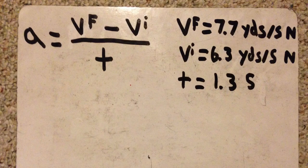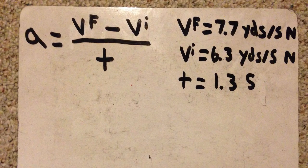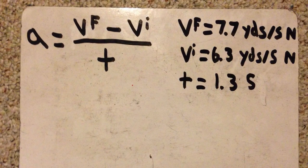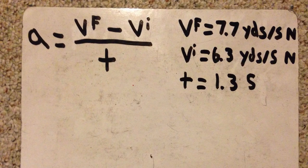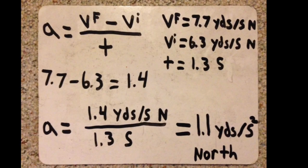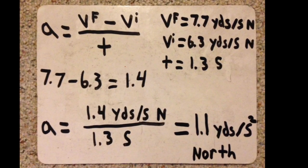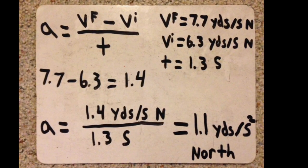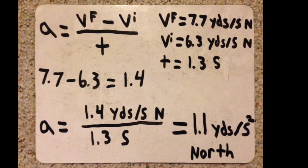We can then use the acceleration formula and insert 7.7 for final velocity and 6.3 for initial velocity. You can subtract these units and get 1.4 yards per second. We finally divide this by 1.3 seconds and we get the answer: I was accelerating at 1.1 yards per second squared.